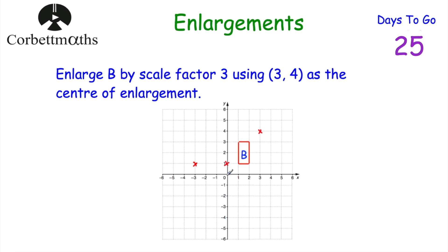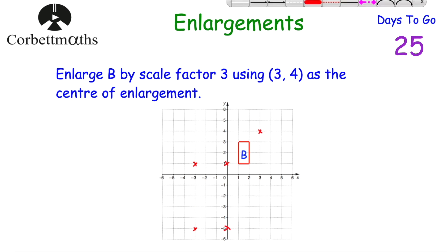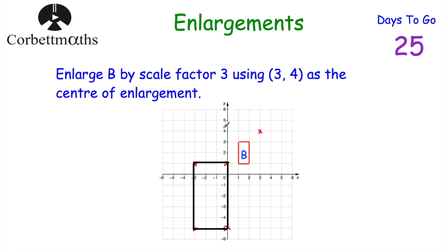Counting nine squares down from three left gives us that point. Finally, the last point is two left and three down from the centre of enlargement — multiplying by three gives six left and nine down: six across and nine down to place that final point. Now let's join those points up, and that completes the enlargement of B by scale factor 3 using (3, -4) as the centre of enlargement.